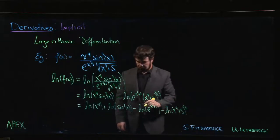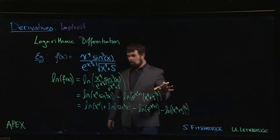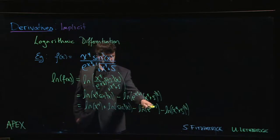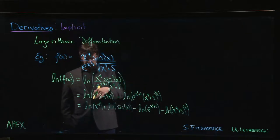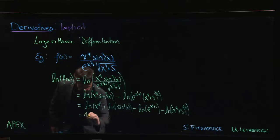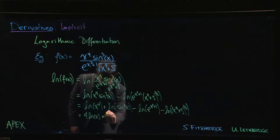That gets us down to there. One last step: we have exponents in each of these terms. We can bring those powers down in front. This is going to be four times the natural log of x. This is going to be three.